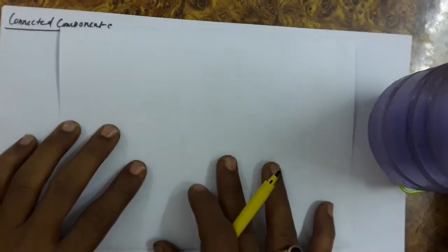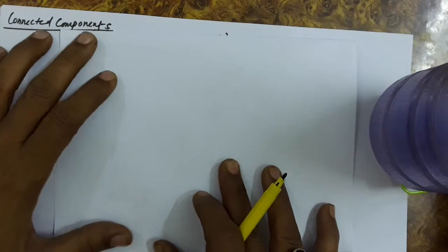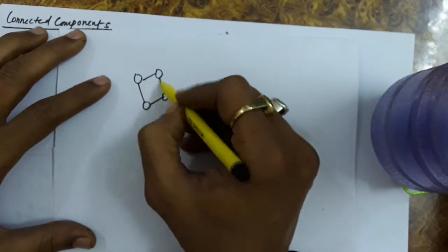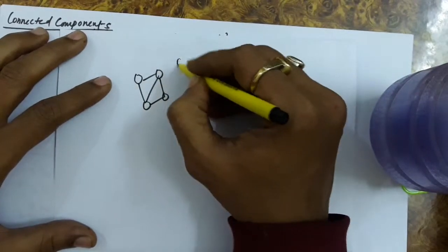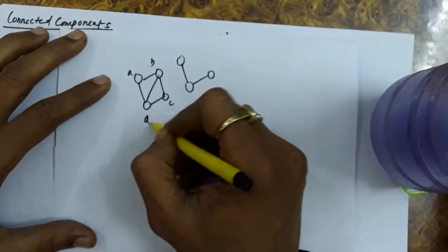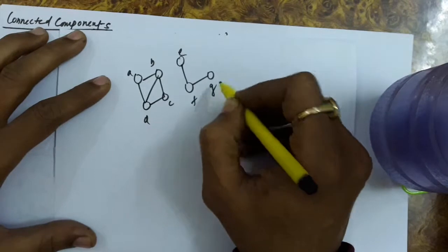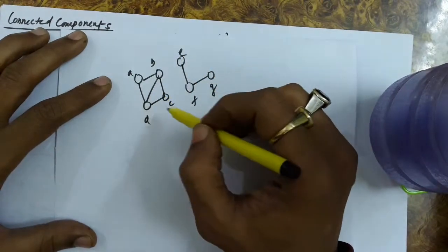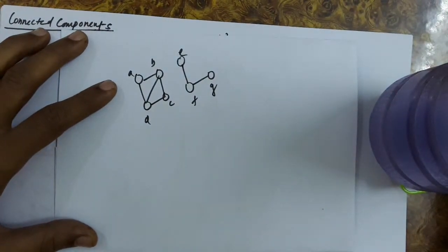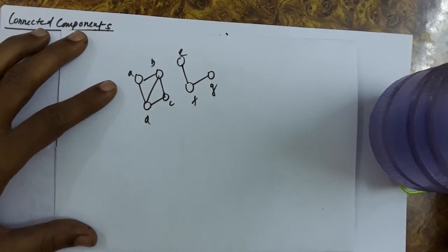We will discuss connected components in this lecture. Given a graph with vertices A, B, C, D, E, F, G, you can see that in the same graph we have two connected components: one connected component is A, B, C, D and another connected component is E, F, and G.